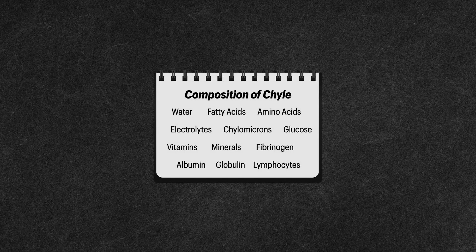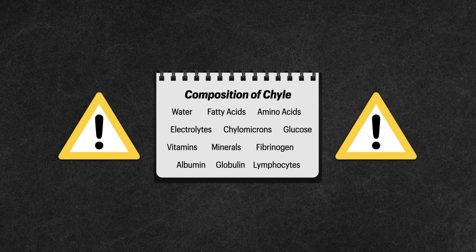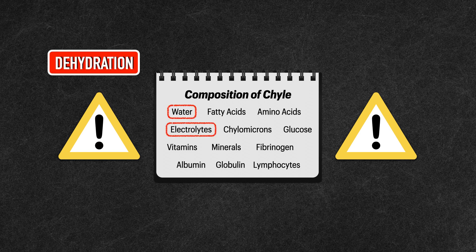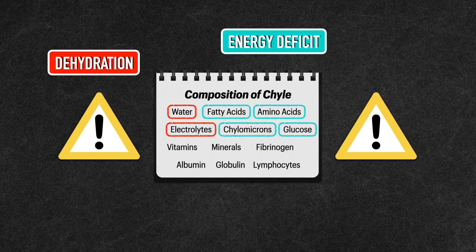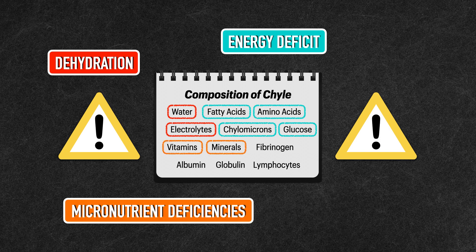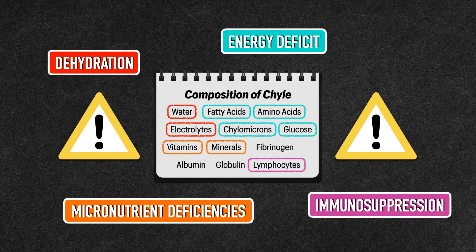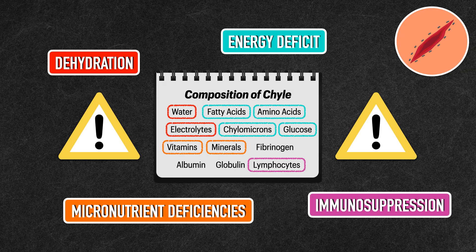Considering the composition of chyle, you can see how a chyle leak is problematic. Losing a significant amount of chyle can result in dehydration from the loss of fluid and electrolytes, an energy deficit from the loss of glucose, amino acids, fatty acids, and chylomicrons, micronutrient deficiencies from the loss of vitamins and minerals, and immunosuppression from the loss of lymphocytes.